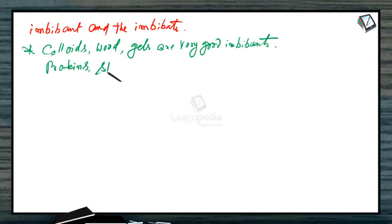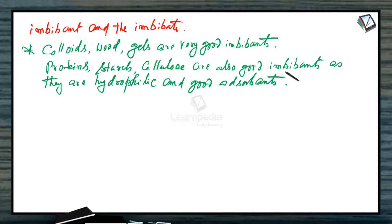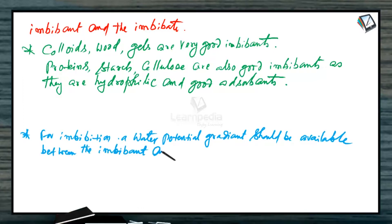Proteins, starch, and cellulose are also good imbibents as they are hydrophilic and good adsorbents. For imbibition, a water potential gradient should be available between the imbibent and imbibate.